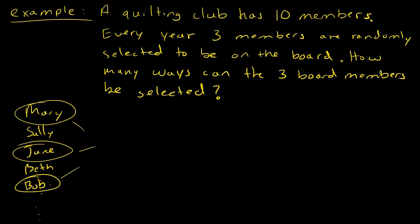Whether it's Mary, Jane, Bob or Bob, Jane, Mary, it doesn't matter — if you're selected for the board, you're selected for the board. These are not particular positions on the board, so position doesn't matter. And you can't have Mary on the board twice, so selection is without replacement. Those crazy combinations — order does not matter — so we'll use a combination.